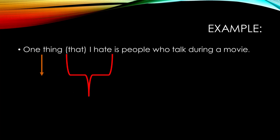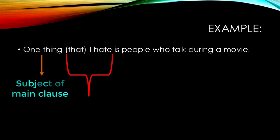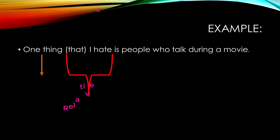Let's go over this example: 'One thing that I hate is people who talk during a movie.' 'One thing' is the subject of the main clause, leaving us with 'that I hate' as the relative clause that describes the subject.